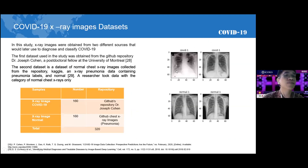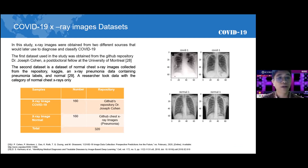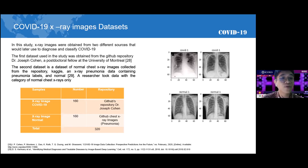For the COVID-19 X-ray image dataset, we used two resources. The first dataset was obtained from the GitHub repository of Dr. Joseph Cohen, a postdoctoral fellow at the University of Montreal. The second dataset is a normal chest X-ray image dataset from the Kaggle repository called X-ray Pneumonia data. We took only data with the category of normal chest X-ray and did not use pneumonia labels. We have 160 images each for COVID-19 and normal categories.